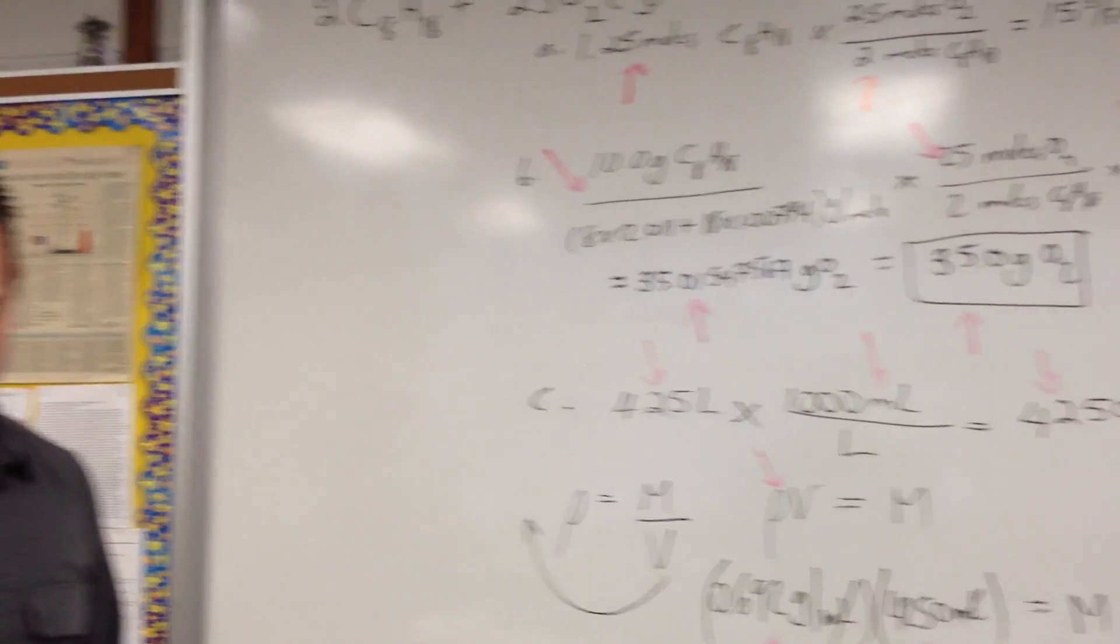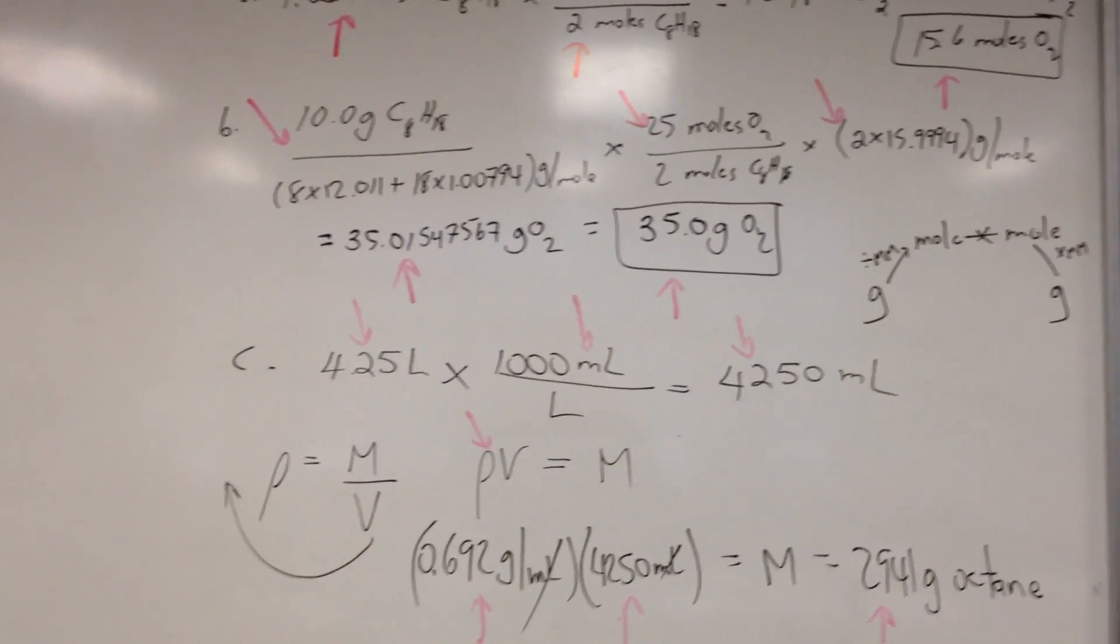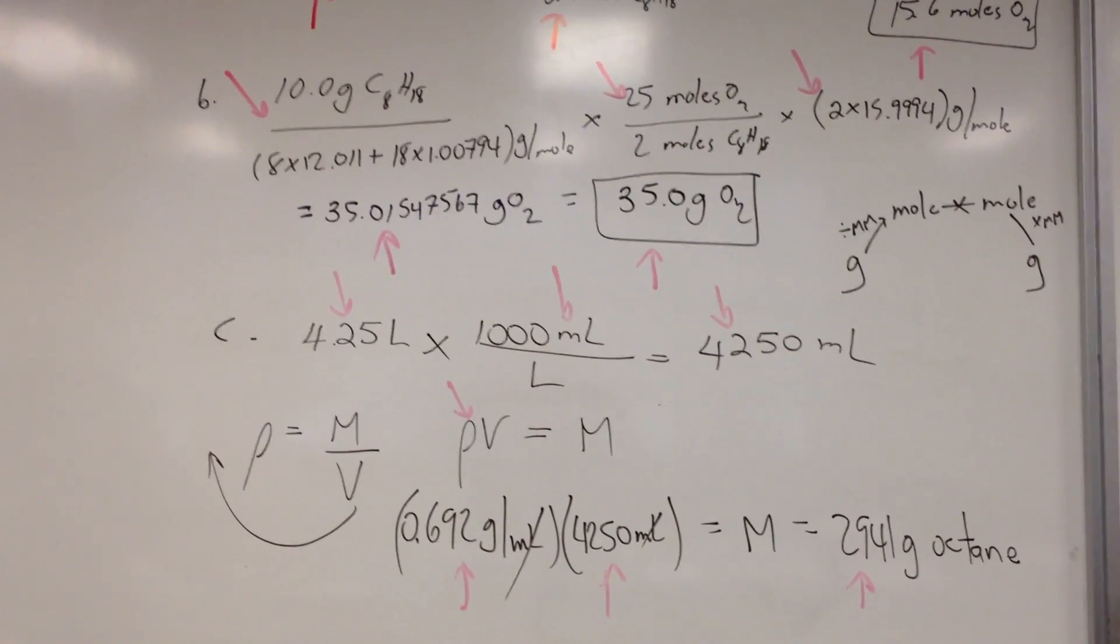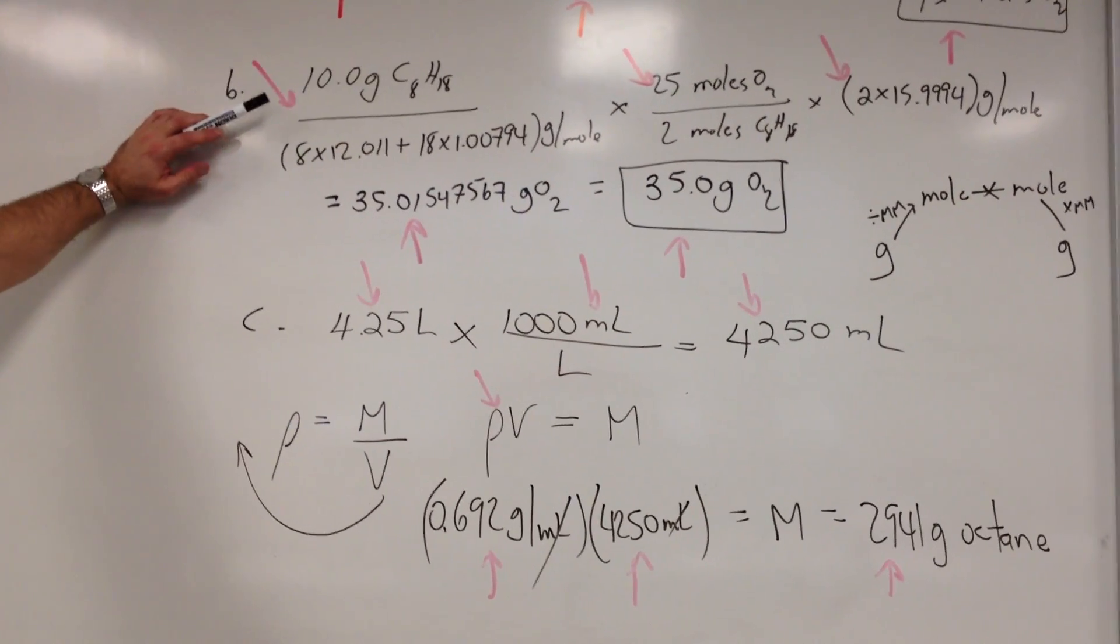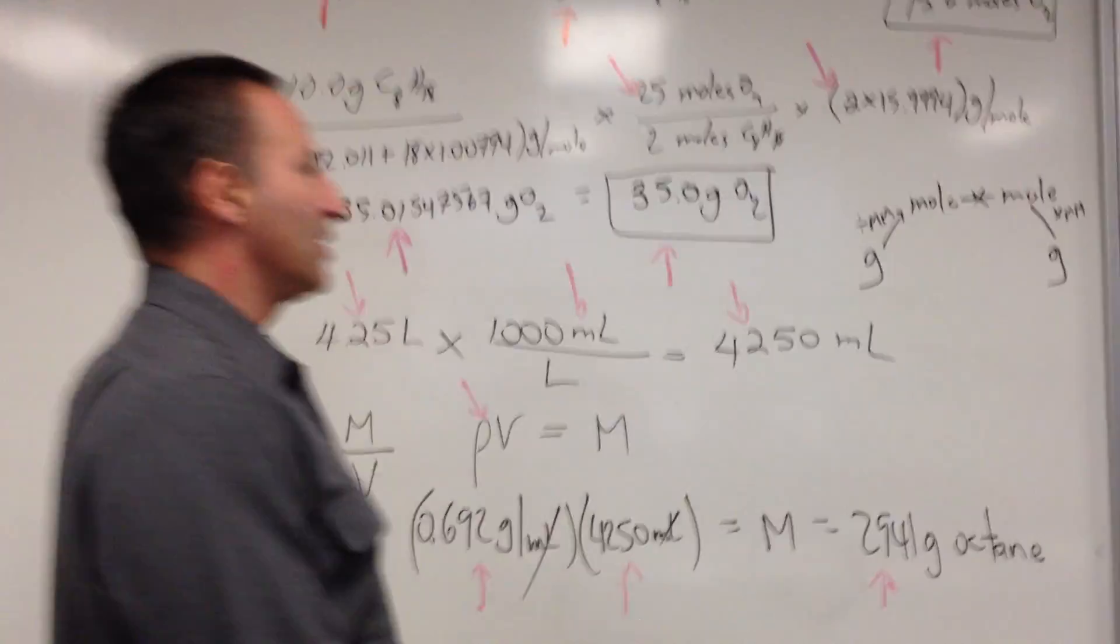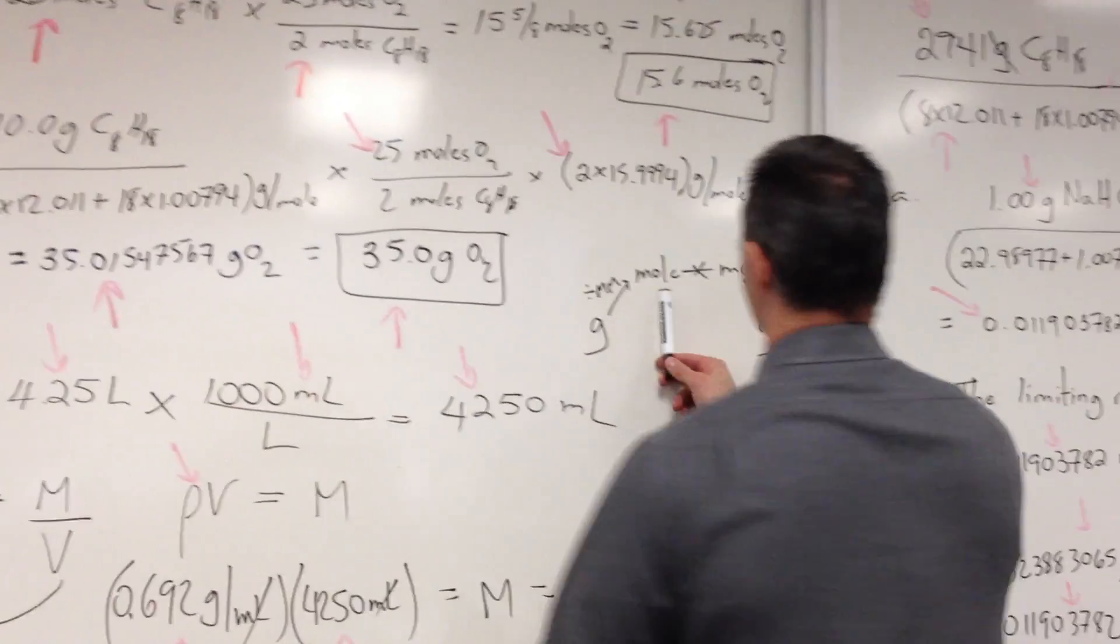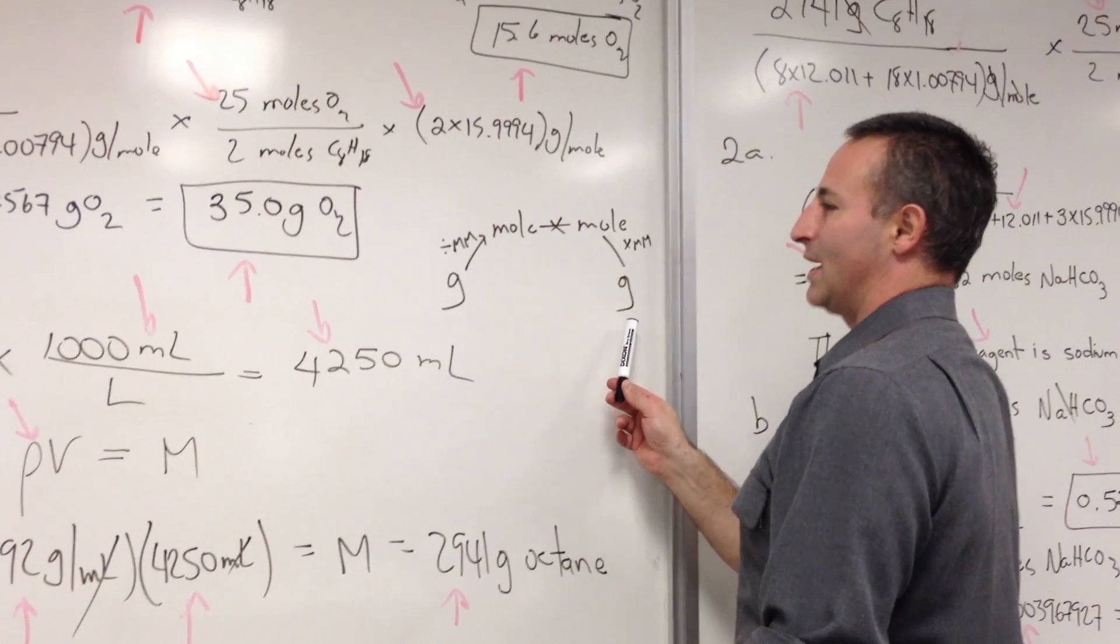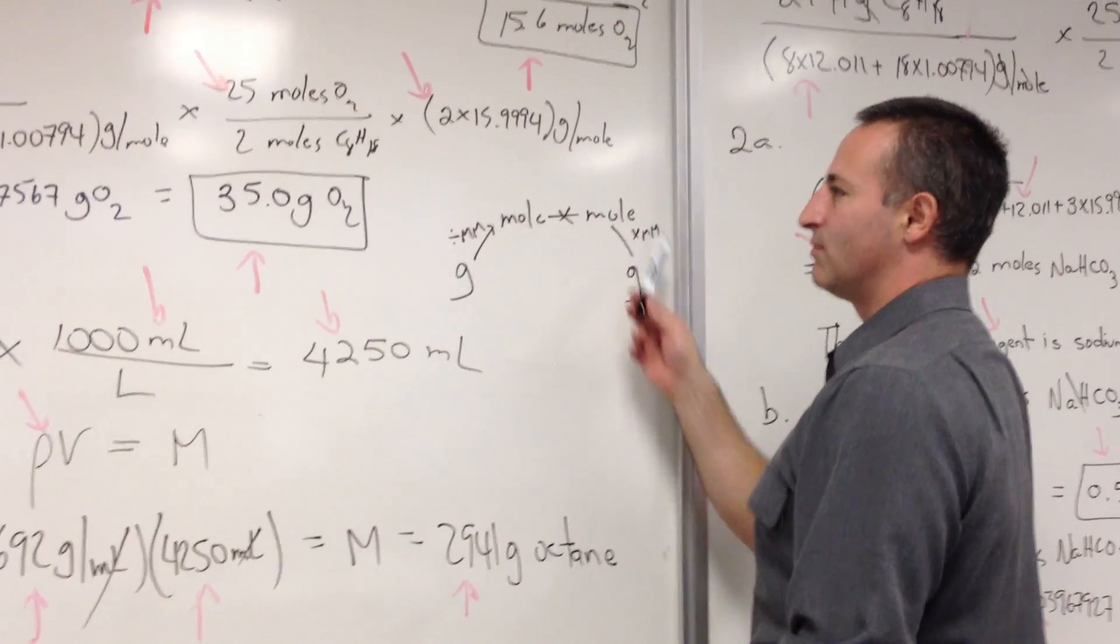In B, the question is, how many grams of oxygen are needed to burn 10 grams of octane? So the first step here, remember these problems run along the lines of grams to moles, moles to moles through the stoichiometry, and then from moles back to grams. It's always the same format.